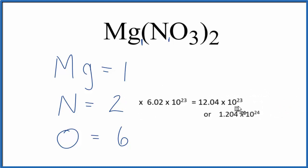Two times Avogadro's number gives us 12.04 times 10^23 atoms of nitrogen in one mole of magnesium nitrate.